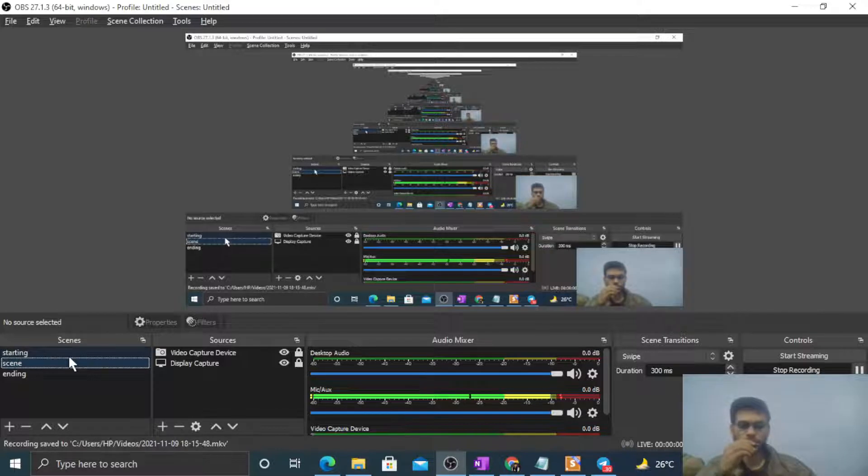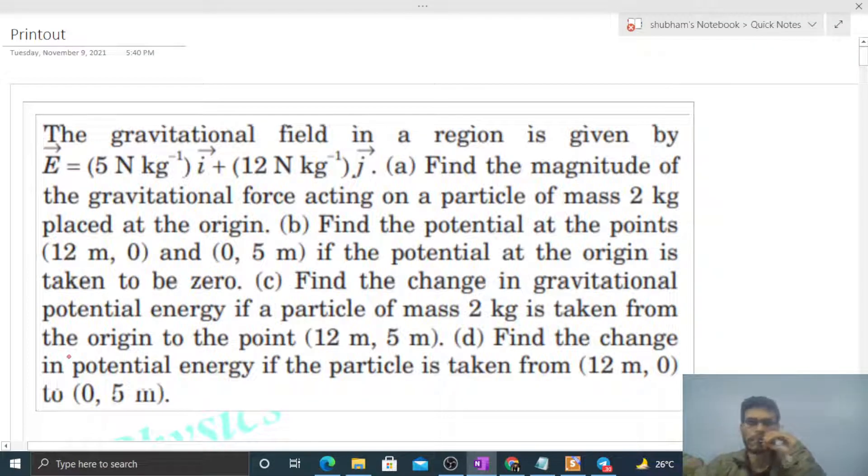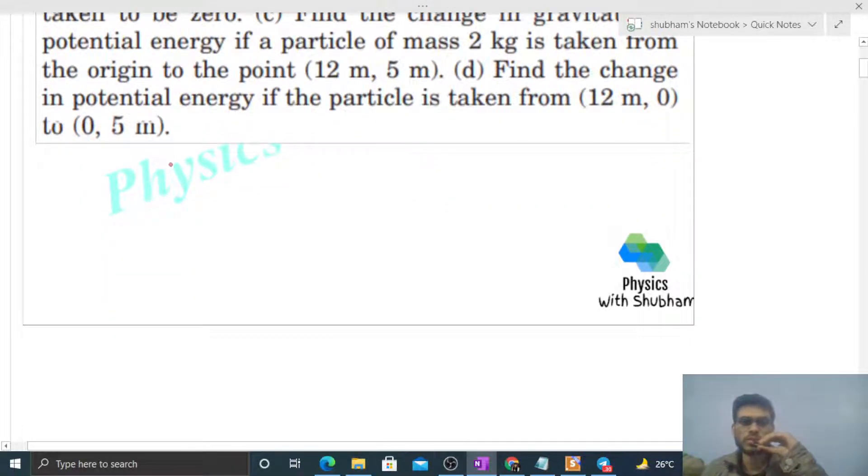Hi everyone, today let's discuss this interesting problem. The gravitational field in a region is given by E = 5 N/kg i-cap + 12 N/kg j-cap. Find the magnitude of the gravitational force acting on a particle of mass 2 kg placed at the origin.